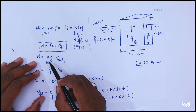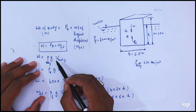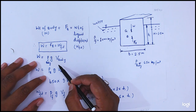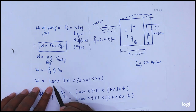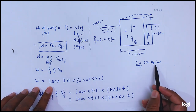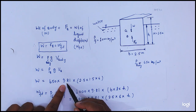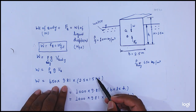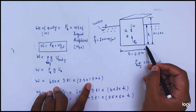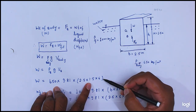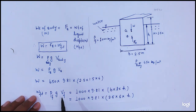The weight of the body is equal to rho times g times volume of the body, where rho means density of the body. The density of the body is 650 kg per meter cube, g is 9.81, and volume of the body is equal to width 2.5 times depth 1.5 times length 6 meter.